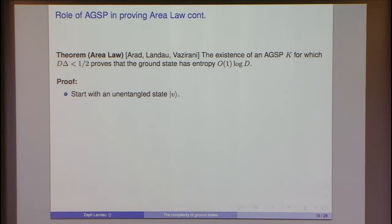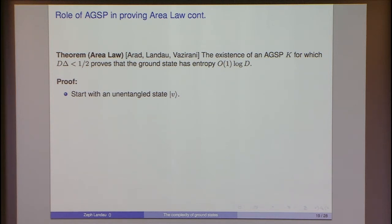The hard part of the area law argument is showing there exists a relatively non-complex state with any non-trivial inner product with the ground state — a random state will have exponentially small overlap. The idea is to start with an unentangled state, which is not too complex, apply the AGSP repeatedly to rapidly converge toward the ground state, and bound the resulting complexity throughout the process.